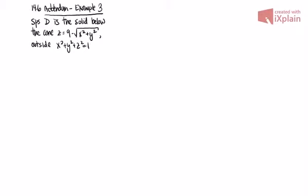So here's the situation. Let's say suppose that D is the solid below the cone z equals 9 minus the square root of x squared plus y squared, so there's a cone opening down with the vertex in line. It'll be outside x squared plus y squared plus z squared equals 1, that's a sphere centered at the origin, and it'll be above the xy plane. What we want to do is evaluate the triple integral over D of y squared z dV.